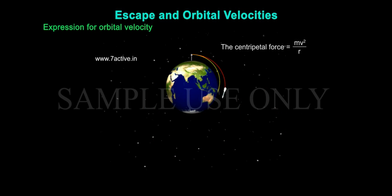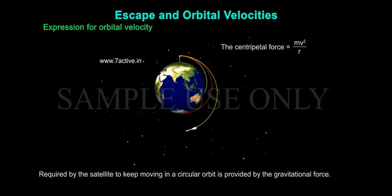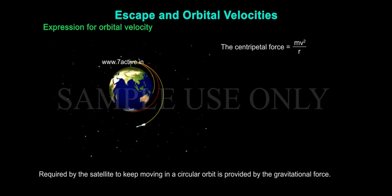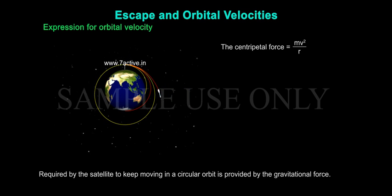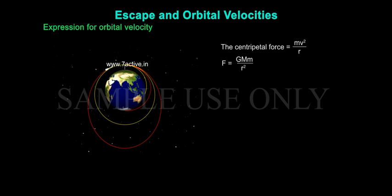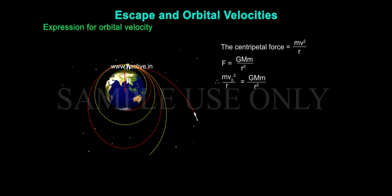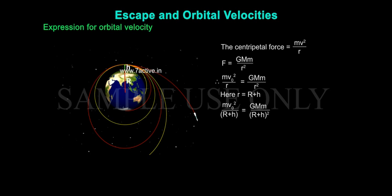The centripetal force is equal to mv² / r. The force F required by the satellite to keep moving in a circular orbit is provided by the gravitational force: F = GMm / R². Therefore, mv0² / R = GMm / R². Here, R = R + H. Therefore, mv0² / (R + H) = GMm / (R + H)².